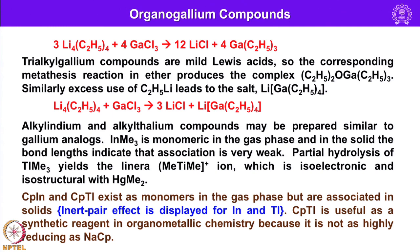Alkyl indium and alkyl thallium compounds may be prepared similarly to gallium analogs. Trimethyl indium is monomeric in the gas phase; in the solid state, bond lengths indicate the association is very weak. Partial hydrolysis of trimethyl thallium yields the linear dimethyl thallium cation, which is isoelectronic and isostructural with dimethyl mercury. Both cyclopentadienyl indium (CpIn) and cyclopentadienyl thallium (CpTl) exist as monomers in the gas phase but are associated in solids. They display the inert pair effect. CpTl is a useful synthetic reagent in organometallic chemistry because it is not as highly reducing as NaCp.